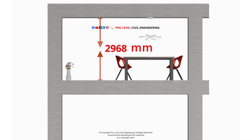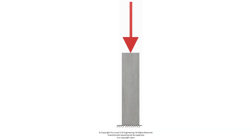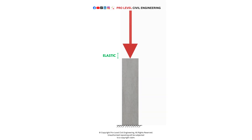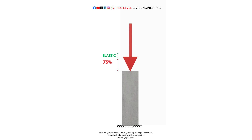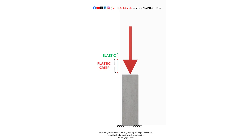If your apartment's height seems to shrink over time, don't be surprised. When a compressive load is applied to concrete, it shortens immediately due to elastic deformation. If a load remains applied for a long time, the concrete will continue to shorten, with approximately 75% of the total deformation occurring in the first year. The remaining 25% will develop over the following years. This additional, time-dependent deformation is called creep.